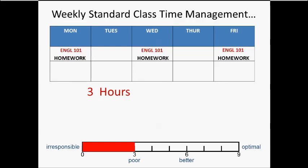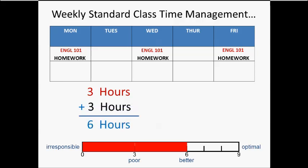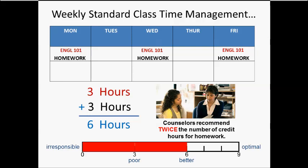That would be an additional three hours, for a total of six hours of work that week. Any counselor is going to tell you, especially if you're not good in a subject, that you need to spend twice the number of credit hours for homework on average per week if you're going to succeed in that class. For a three-credit class, you should be spending an additional six hours per week in homework. That means for English 101, you should be spending a total — including class time, homework time, and maybe time in the writing center — of nine hours as the optimal amount.